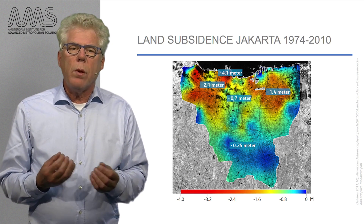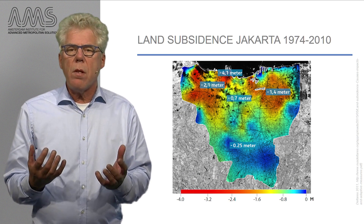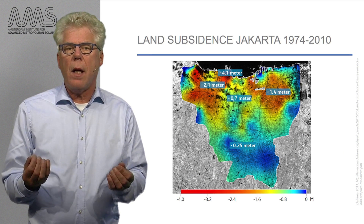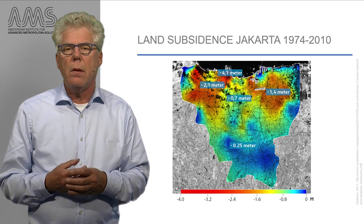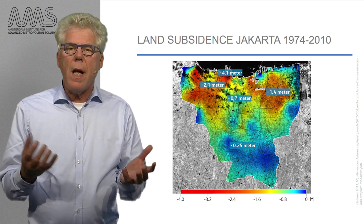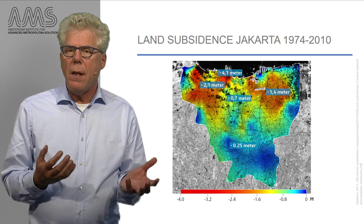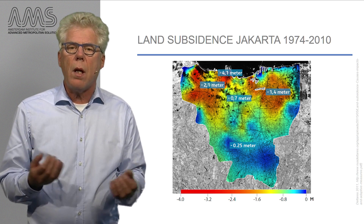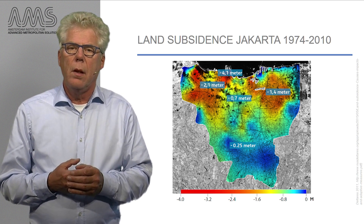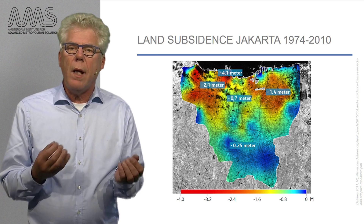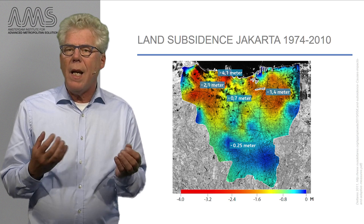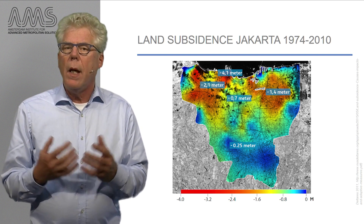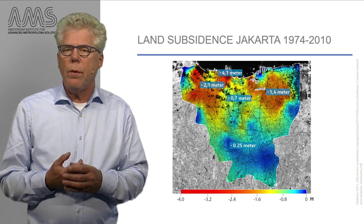One of the places in the world where these processes are creating very strong subsidence is Jakarta in Indonesia. The current average land subsidence rate there is 7.5 to 10 cm per year along the coastline. Future population growth in the delta and increasing need for drinking water are likely to aggravate the problems in Jakarta further.